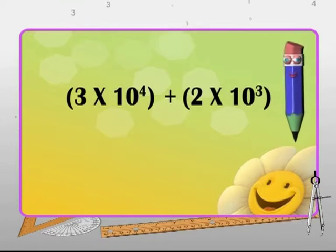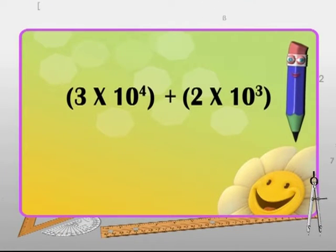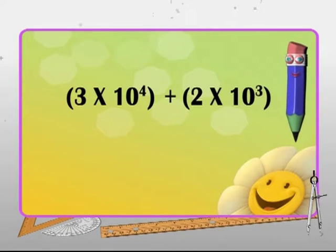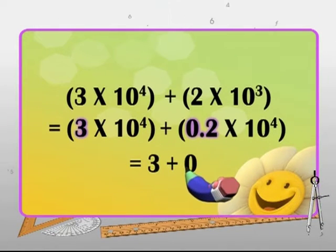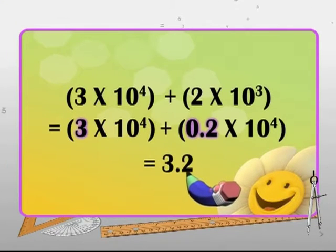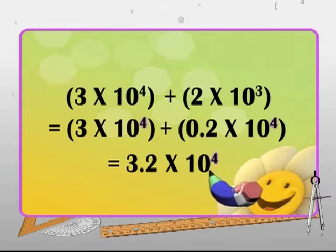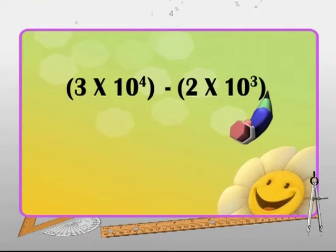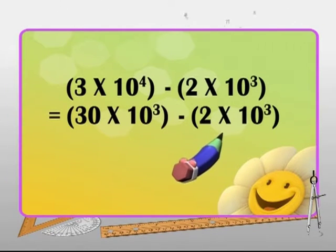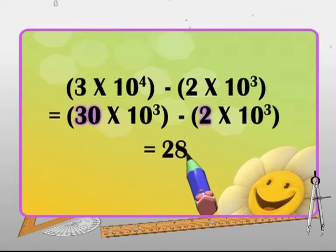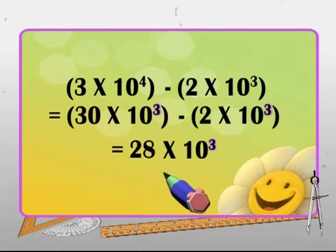For addition of two numbers using scientific notation, first make the exponents of the two numbers equal by appropriately changing the position of the decimal in the coefficient of one of the numbers. Then add the two coefficients; the exponent of the sum remains the same. Similarly, for subtraction, make the two exponents equal, then find the difference between the coefficients — that becomes the coefficient of the final difference — and the exponent remains the same.